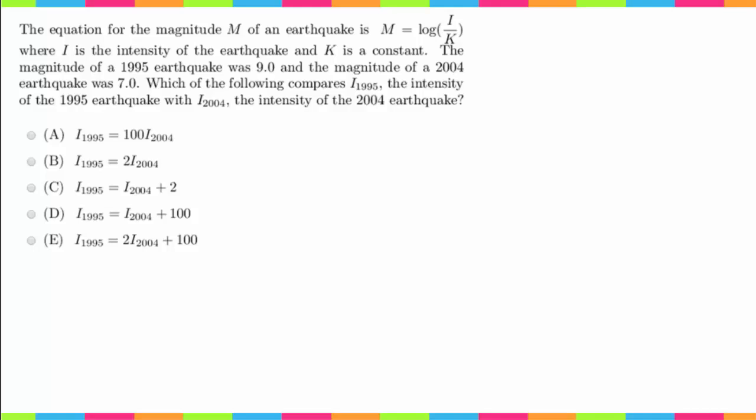Okay, so the first thing I'm going to do in this question is set up two separate equations: one for the 1995 earthquake and one for the 2004 earthquake. So for the 1995 earthquake we know there's a magnitude of nine, I'll go ahead and underline that. And for the 2004 earthquake we know there was a magnitude of seven.